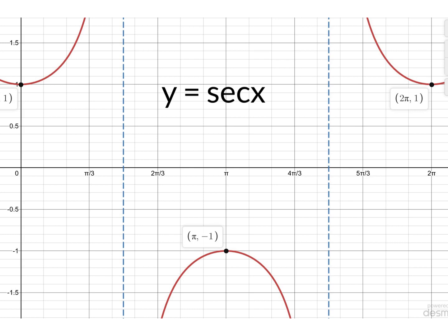So this is a reminder, this is sec x, this is the reciprocal of cos. So cos is at 0 at π/2, so there's an asymptote for sec, and cos returned to 0 at 3π/2, so there's another asymptote there.